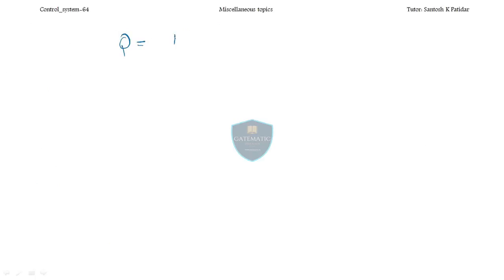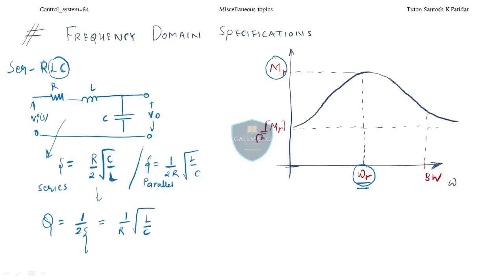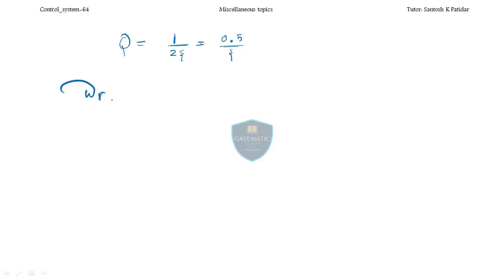Remember that Q, the quality factor, is 1 by 2 zeta, or 0.5 divided by zeta. Now let us come to the very important thing — the resonant frequency omega_r. In terms of the system parameter zeta, omega_r is given by omega_n times the square root of 1 minus 2 zeta squared, in radians per second. This is the frequency at which we get the maximum amplitude or magnitude of the system.